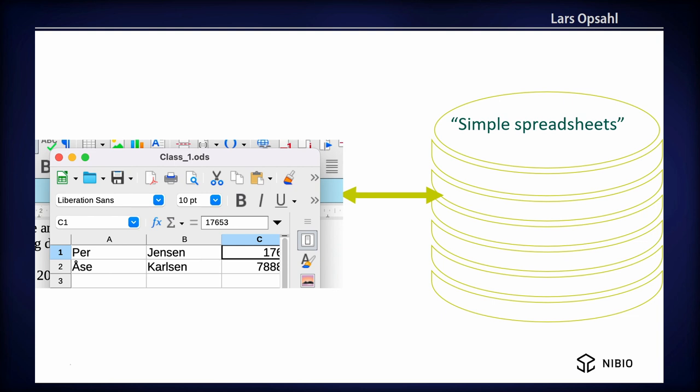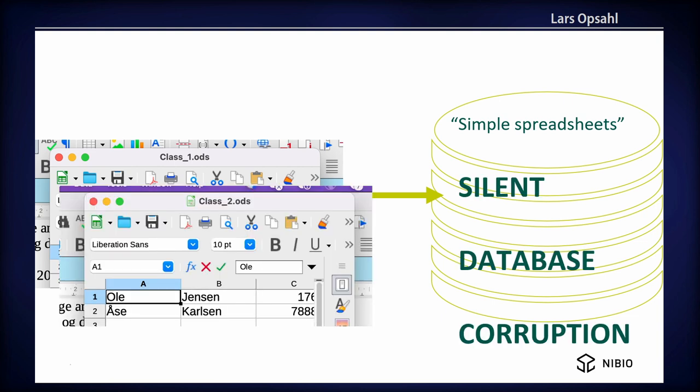But there's a problem with spreadsheets. They only know about themselves. So if you have students in class and you want one student per class per hour, which sounds okay, then you get silent database corruption. Because if you try to open thousands of spreadsheets and find the equal name, it uses a lot of CPU. It's not a nice way to work.